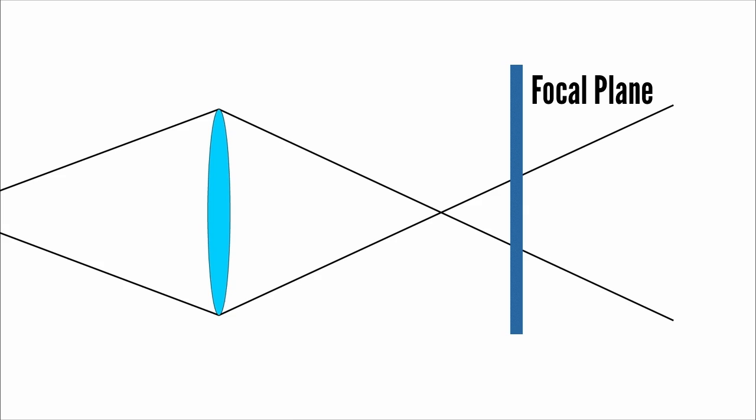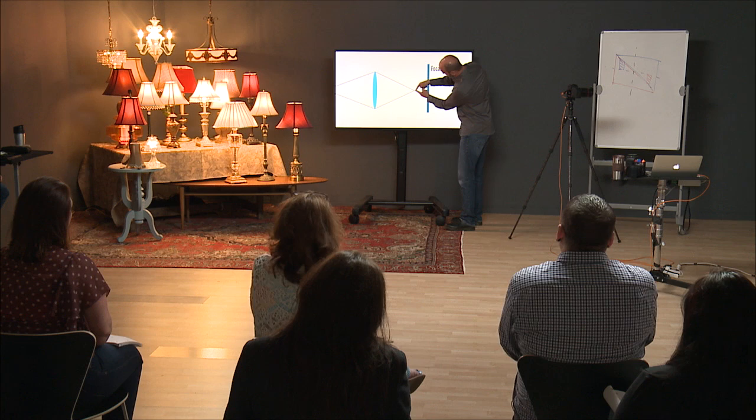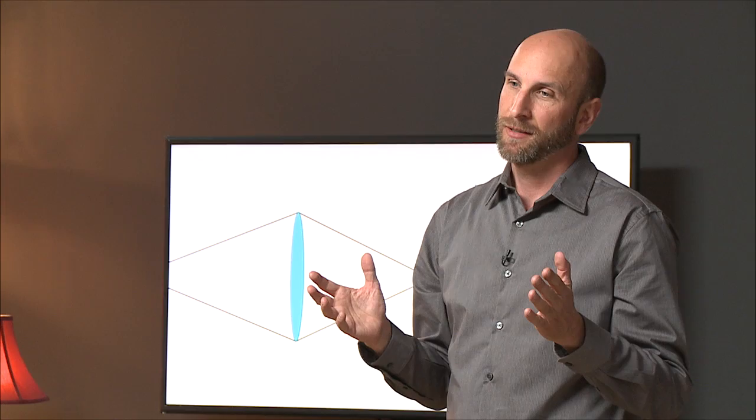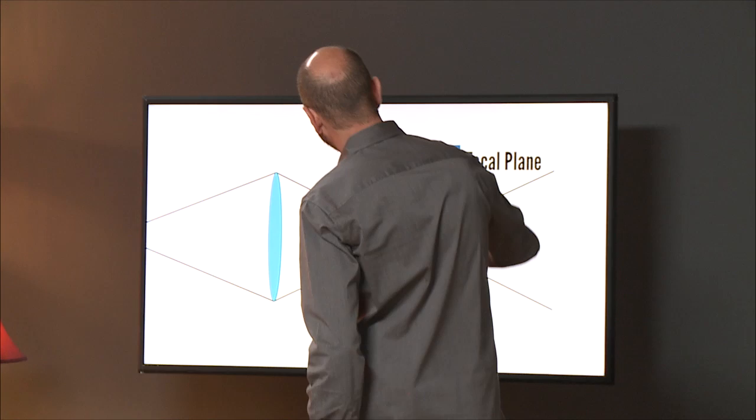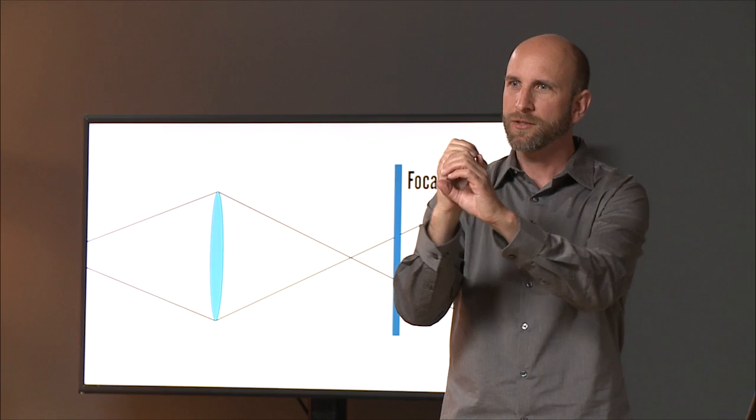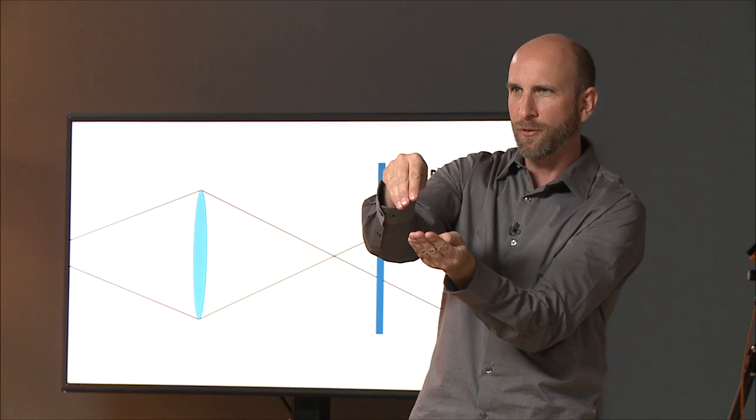Now how does that apply to depth of field and bokeh? Well, this little cone right here, if it's resolved exactly on the sensor, we get something that's clear and it's in focus. But sometimes it doesn't have to be exactly right. So if the focal plane is just off a little bit, we can still identify that thing as a point. Even though it's not as crisp as it could be, it's within the circle of confusion. In other words, it's inside of this thing that we accept as in focus.